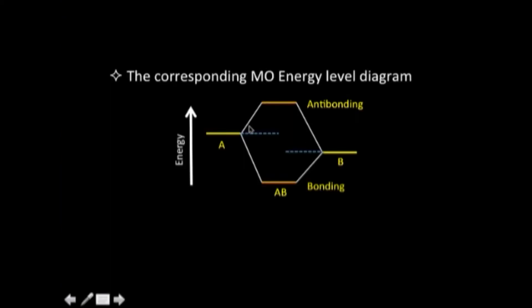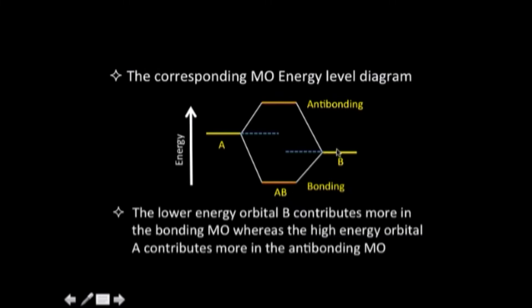Let us see how this combination translates into a molecular orbital energy level diagram. This represents the 2s orbital of atom A and the 2s orbital of atom B. The two have combined to give two molecular orbitals: one bonding and one antibonding. The bonding molecular orbital has more contribution from the atomic orbital of lower energy, and the antibonding molecular orbital has greater contribution from the orbital of higher energy. This is a general observation of interest as we develop the concept further.